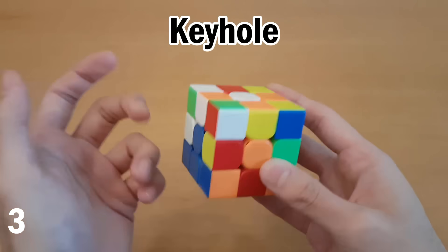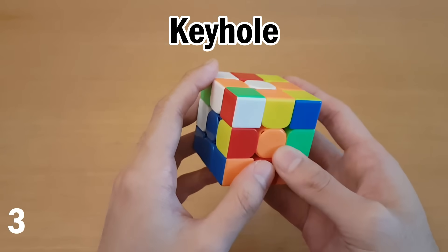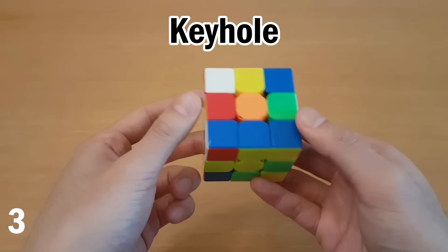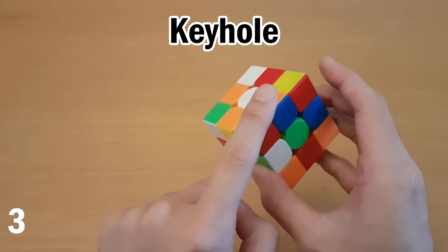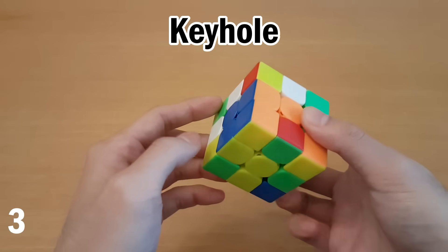Now if you know keyhole in CFOP, then that can really help here. For example, I can do any D move to get this corner out of the way, and then insert this one with L'U2L, and then go back.